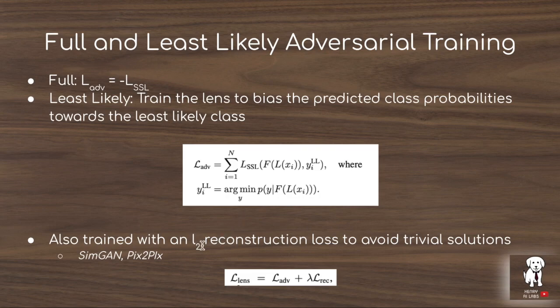So the idea is to also include an L2 reconstruction loss, similar to papers like SimGAN and Pix2Pix. SimGAN takes eye images from a graphics engine and tries to make them more realistic. The key idea is to ensure that modifications from the image-to-image translation network don't change the image too dramatically, so the image still represents the original input. You weight the adversarial loss with the reconstruction loss using a parameter lambda.